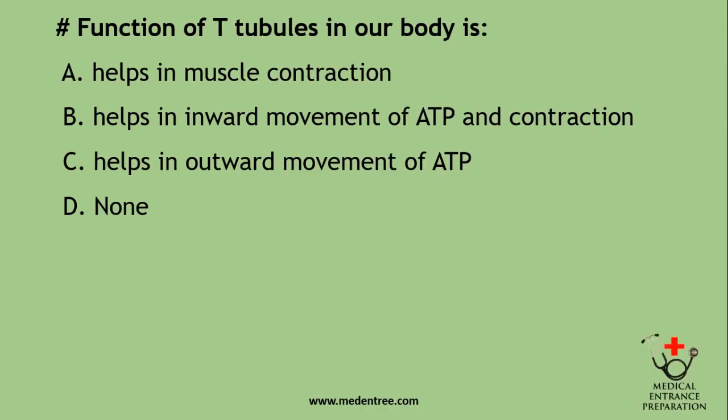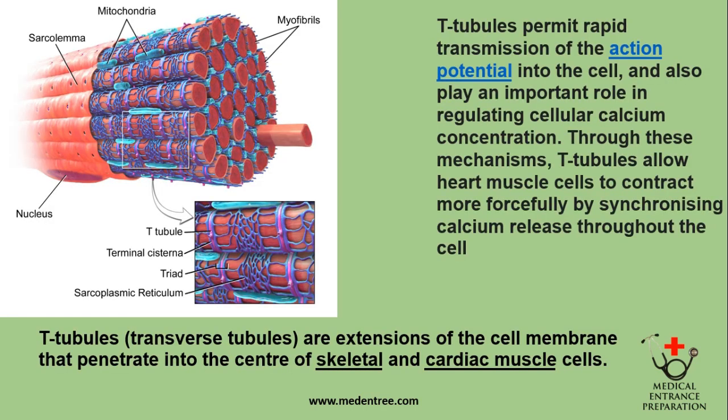Function of T-tubules in our body: A. Helps in muscle contraction; B. Helps in inward movement of ATP and contraction; C. Helps in outward movement of ATP; D. None. The correct answer is B. T-tubules are transverse tubules — extensions of the cell membrane that penetrate into the center of skeletal and cardiac muscle cells. They permit rapid transmission of the action potential and regulate cellular calcium concentration, allowing heart muscle cells to contract more forcefully by synchronizing calcium release.